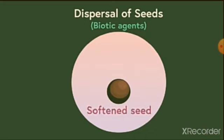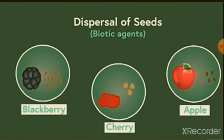This is how animals can help in far and wide dispersal of seeds. Some seeds that get dispersed by this type are blackberry, cherry and apple, and so many pulpy fruits are dispersed by animals.